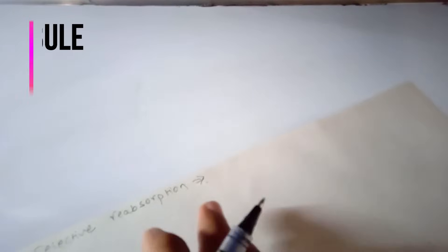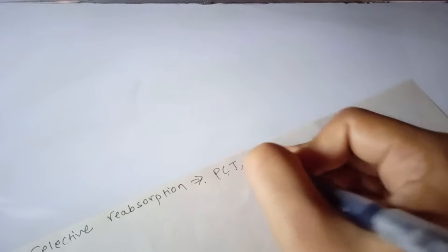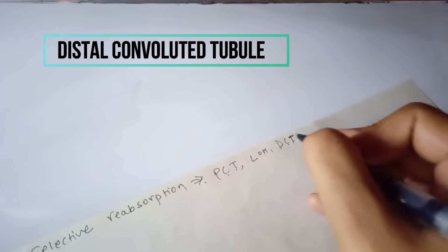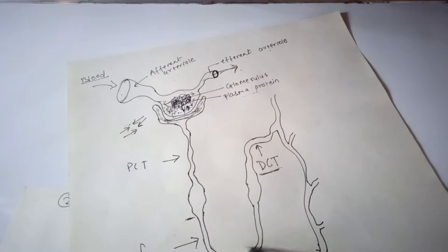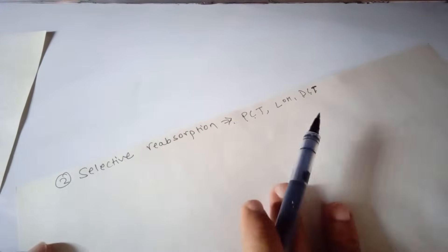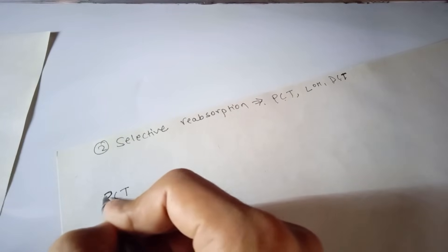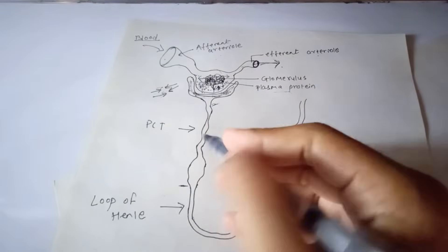Selective reabsorption occurs in three parts: PCT (proximal convoluted tubule), the loop of Henle, and DCT (distal convoluted tubule). PCT is the proximal convoluted tubule, and this is where selective reabsorption begins.